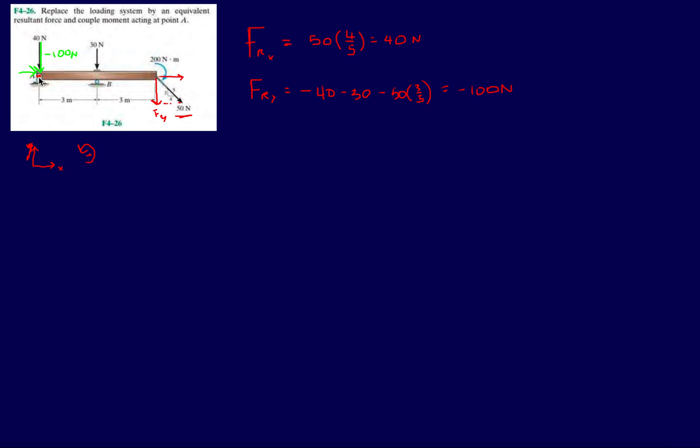So what's the resultant force going to be? So it's going to be, this is the minus 4, there's the 40, let's get a different color. The resultant force is going to be something like this. What I drew in blue, that's the resultant force at A, but now we've got to replace it with a couple moment.